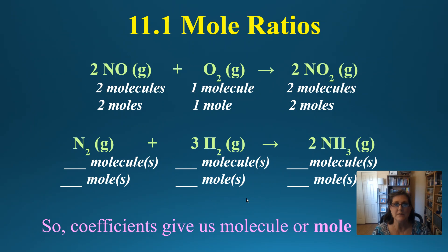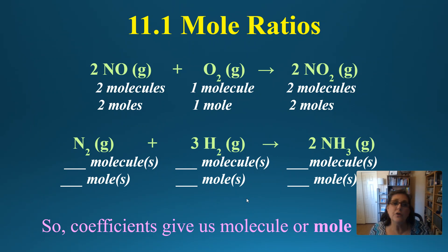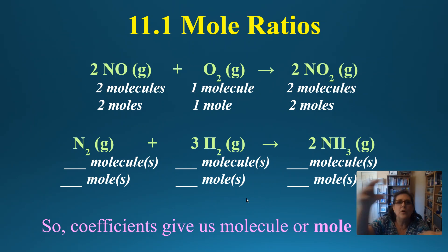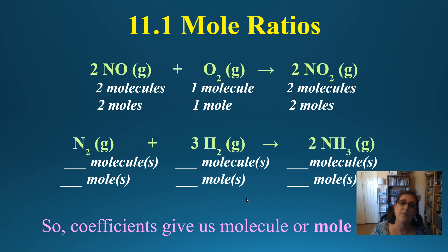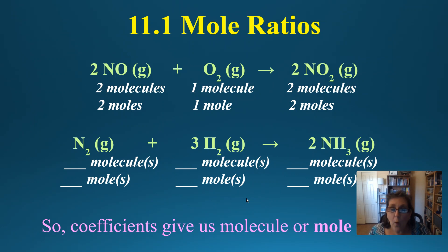Section one: mole ratios. There's a balanced equation right here: 2 NO gas plus oxygen gas makes 2 NO2 gas. We can interpret this as two molecules of NO reacting with one molecule of oxygen to make two molecules of NO2. But in the real world, we can't pick out little molecules — they're too small. So we add moles together: 6.02 times 10 to the 23rd molecules in one mole. Another way to interpret this balanced equation is two moles of NO react with one mole of oxygen gas to make two moles of NO2.